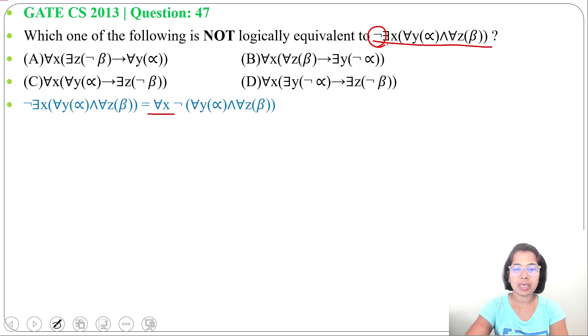So for all X, negation of, and rest are same, for all Y, alpha and for all Z, beta. So we took this negation symbol inside, this existential quantifier changed to universal quantifier.